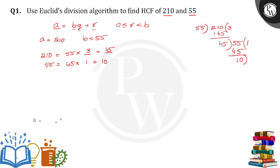Again, 10 will become the divisor, 45 will become the dividend. 10 times 4 is 40, then 45 minus 40 will be the reminder.